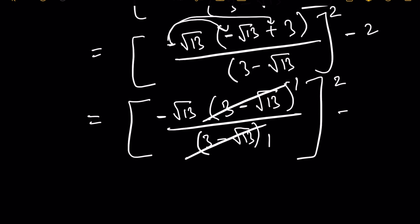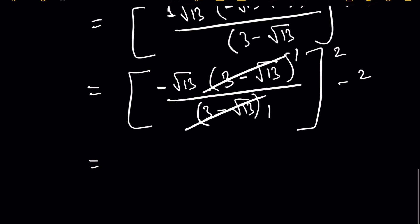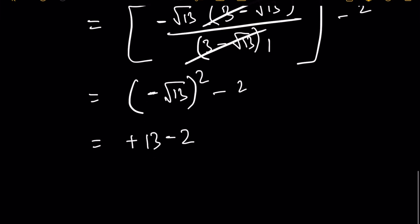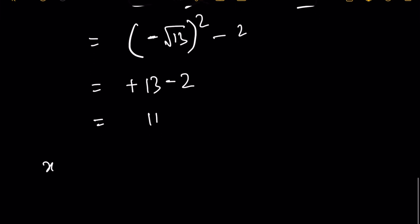We are left with (negative root 13) squared minus 2. Negative squared is positive, and root 13 squared is 13. So this equals 13 minus 2, which equals 11. Therefore, x squared plus 1 by x squared equals 11.